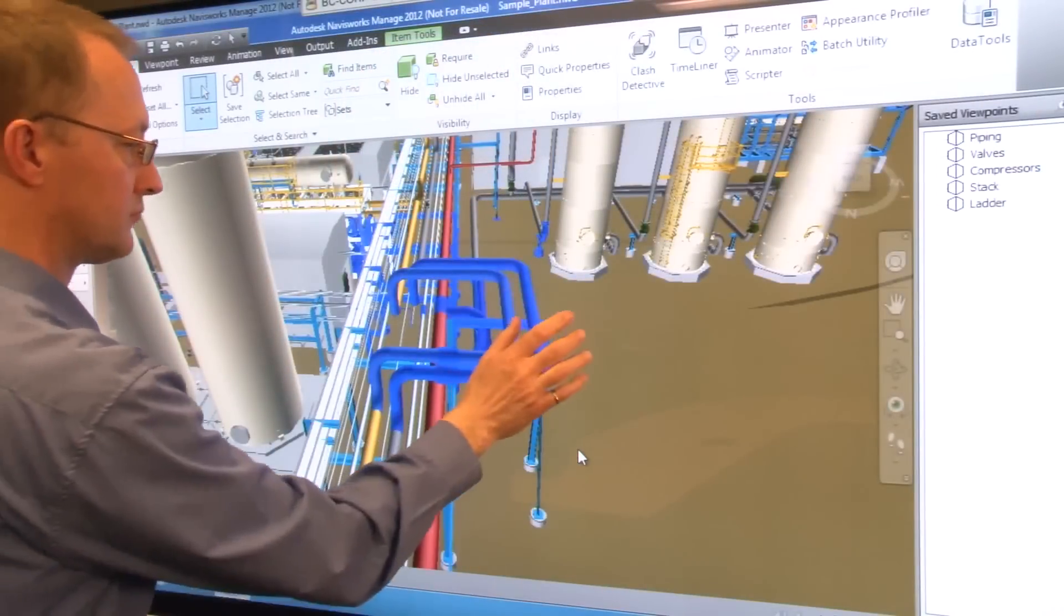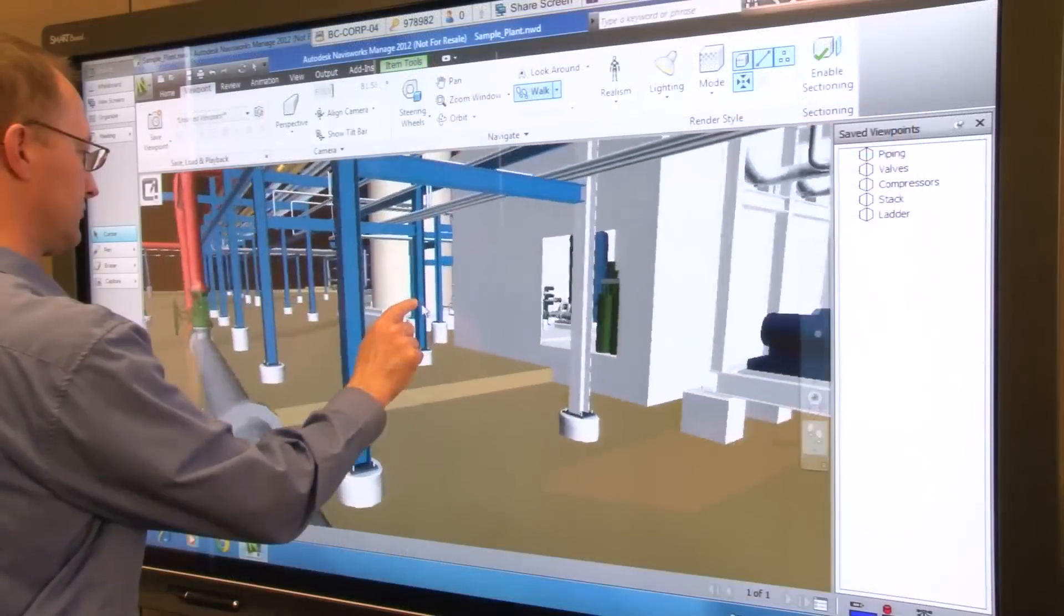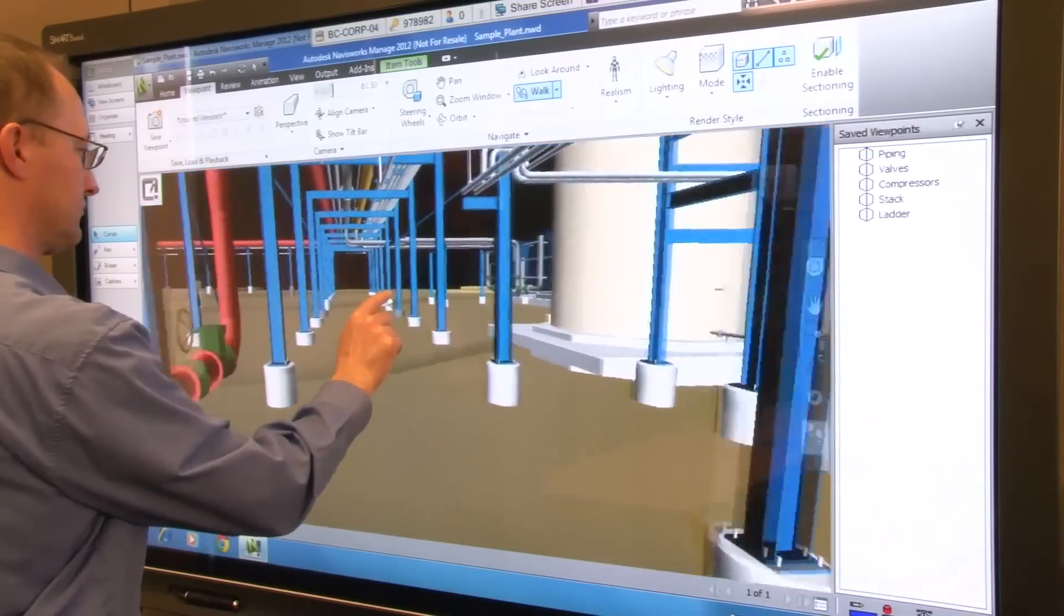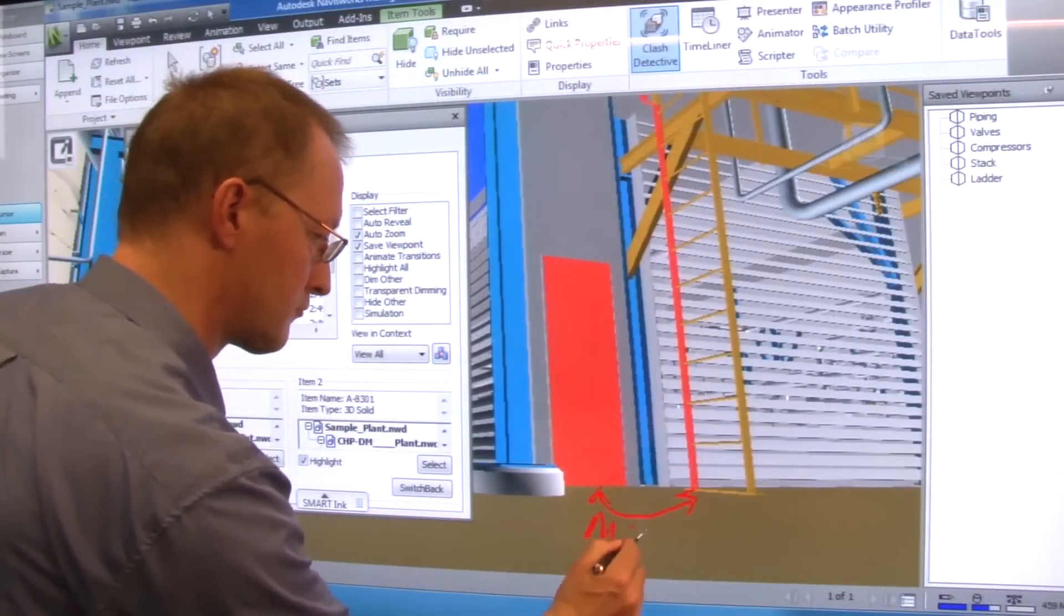Thanks to a plug-in developed by smart ecosystem member IDS Engineering, Autodesk Navisworks users can now take full advantage of the SmartBoard pen tray and touch recognition in order to directly markup and manipulate 3D images while working as a group at a SmartBoard interactive display.